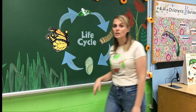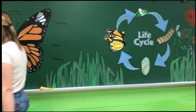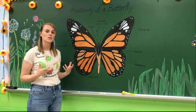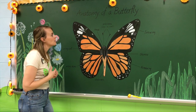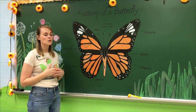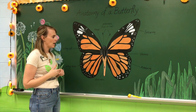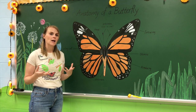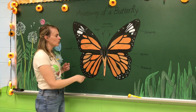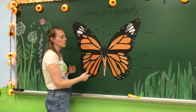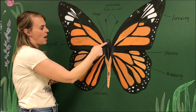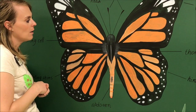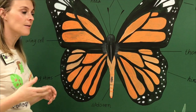Now let's take a look at our butterfly's anatomy. Anatomy tells us about the parts of our animal's body. A butterfly is a special kind of animal called an insect. Insects all have some things in common — they have three parts to their body: a head, a thorax, and an abdomen. They also have six legs.